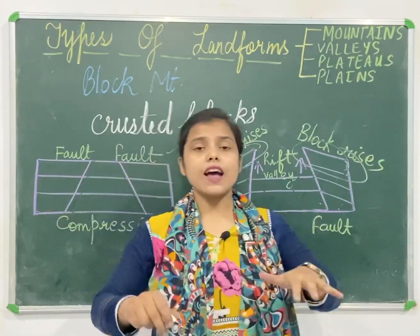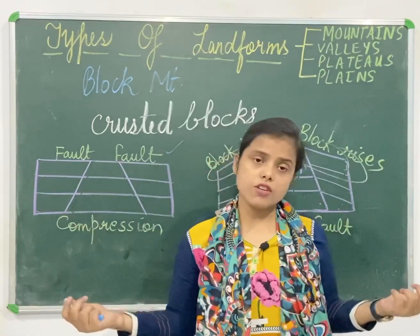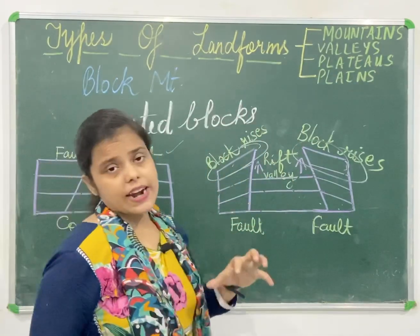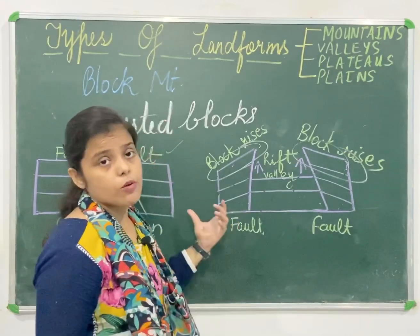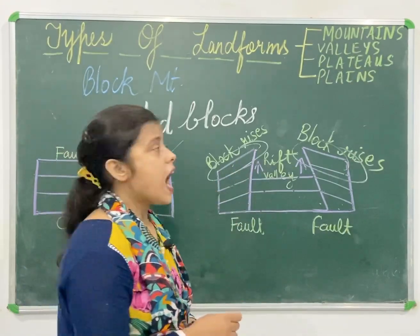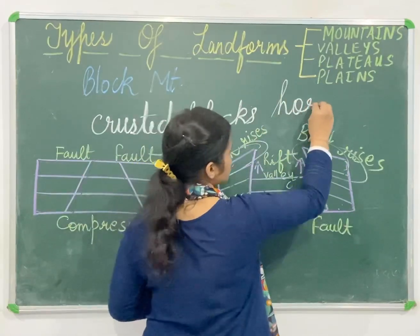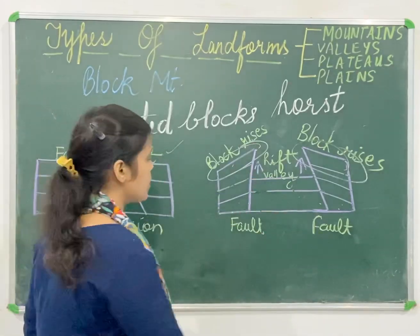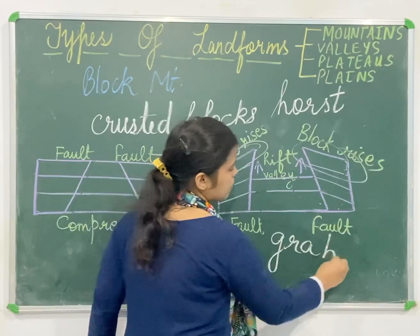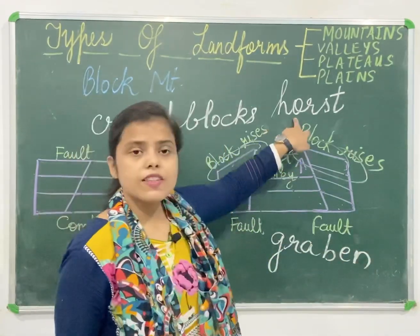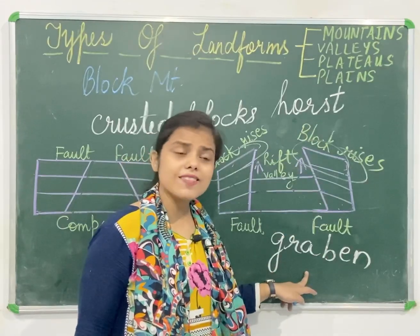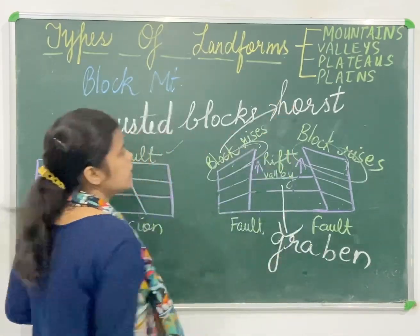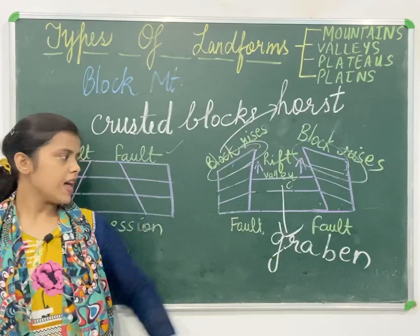Block mountains are the raised parts formed because of tensional forces and the fault that has developed. In your book, the raised block parts are known as horst, and the middle lower portion is known as graben — G-R-A-B-E-N. So you can call the raised part either block mountain or horst, and the rift valley is also known as graben.